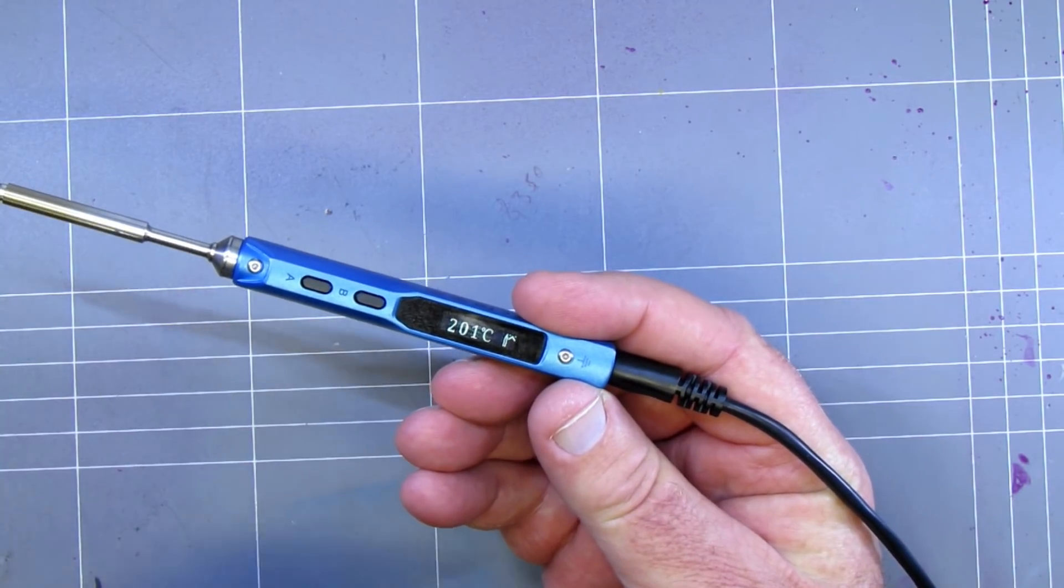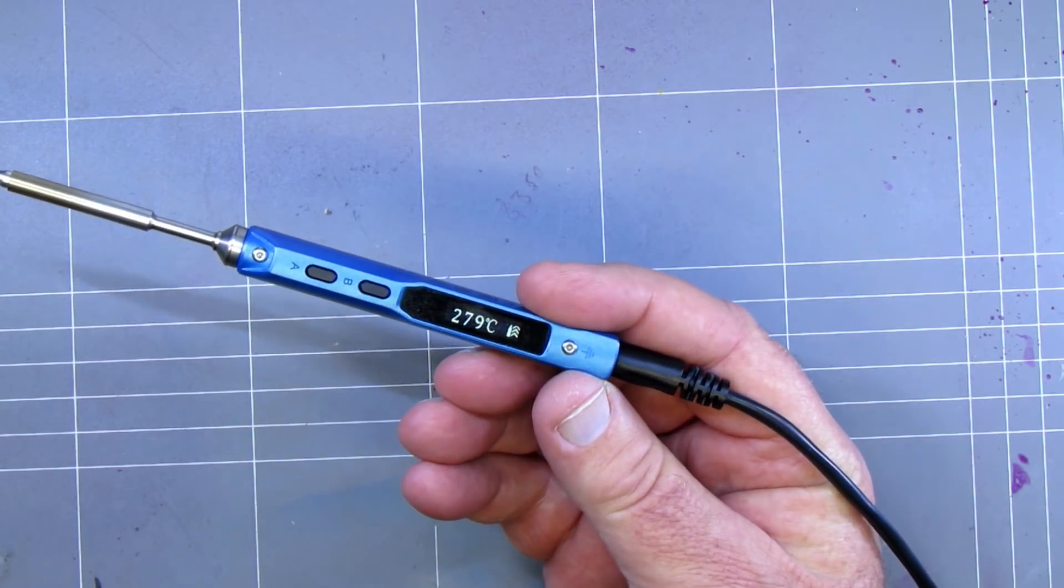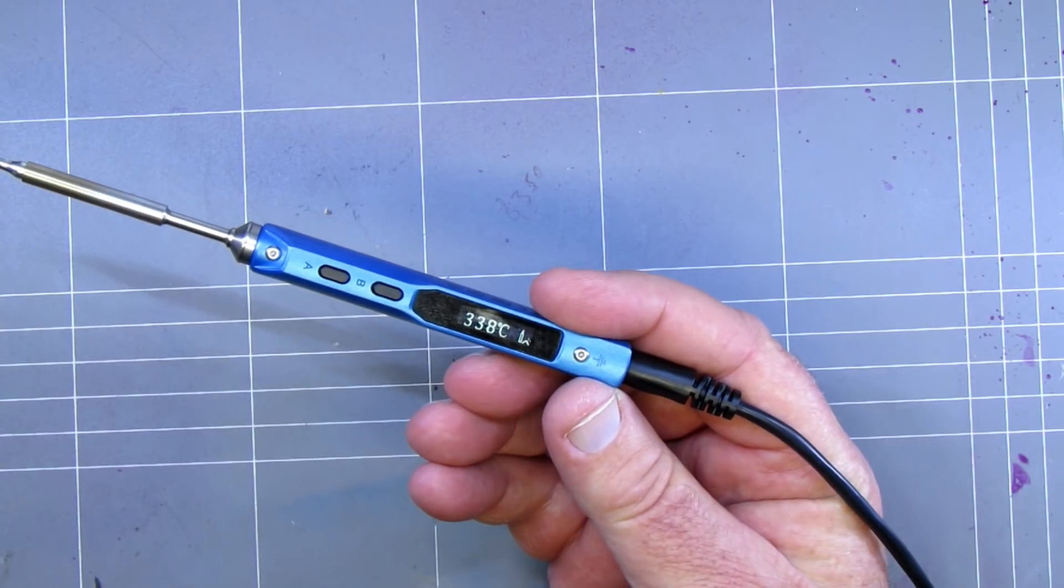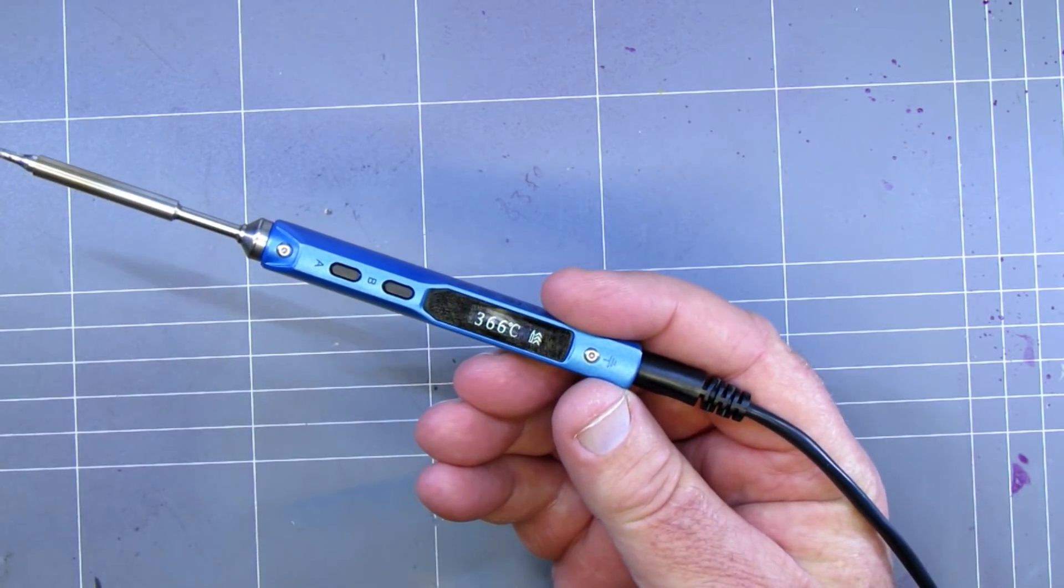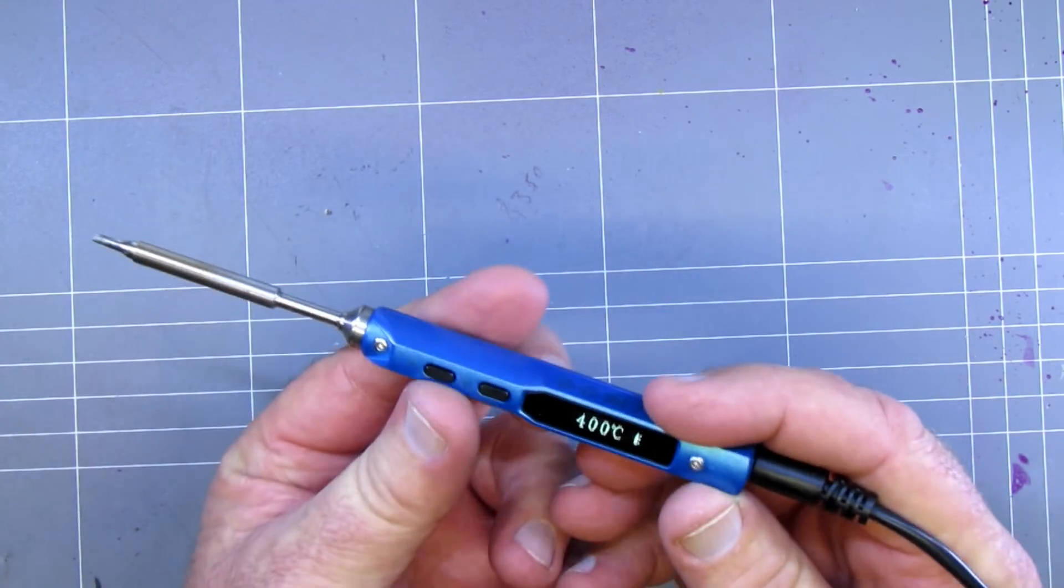I used to use an old butane one in the field and it'd take about five minutes to heat up, and then the wind would blow the element out and you had a lot of trouble trying to get the thing going. So this is ready to rock and roll already. How quick is that?